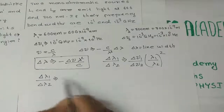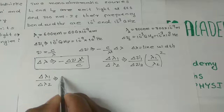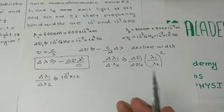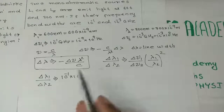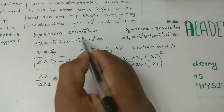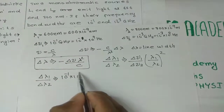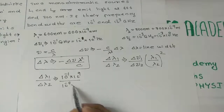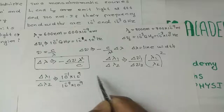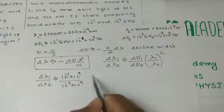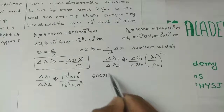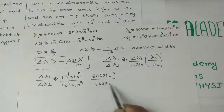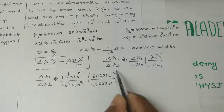Substituting the values: 10 raised to minus 1 times 10 raised to 9, divided by 10 raised to minus 9 for the first source, and 10 raised to minus 3 times 10 raised to 9 divided by 10 raised to minus 9 for the second source, to find the ratio of line widths.